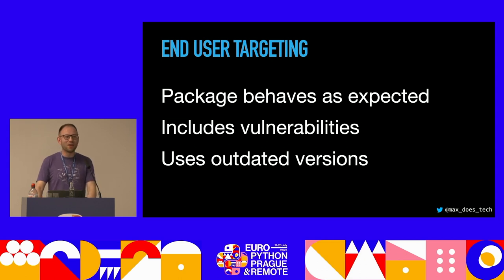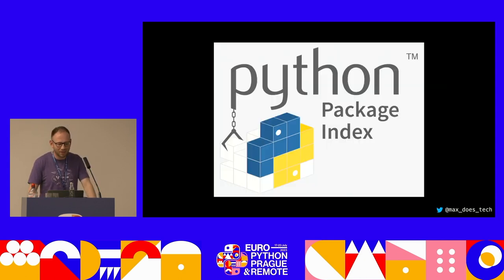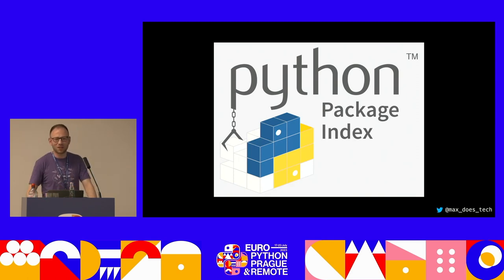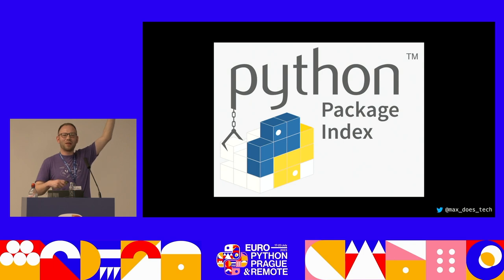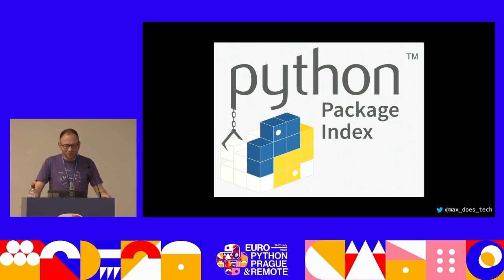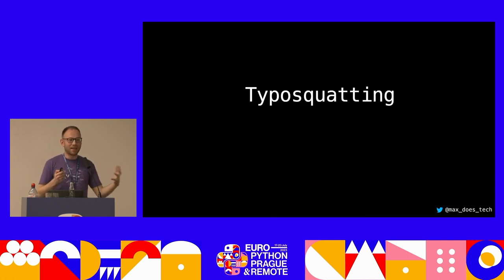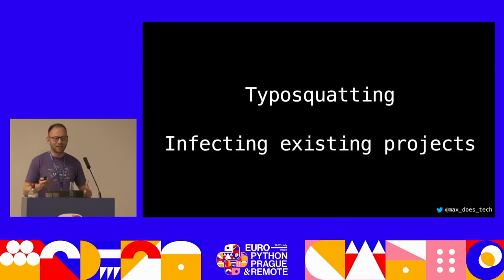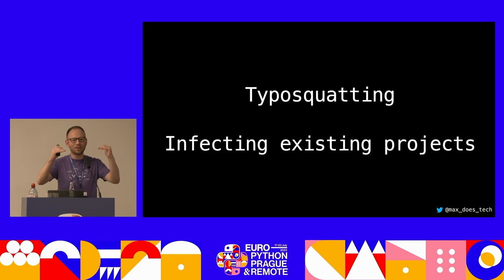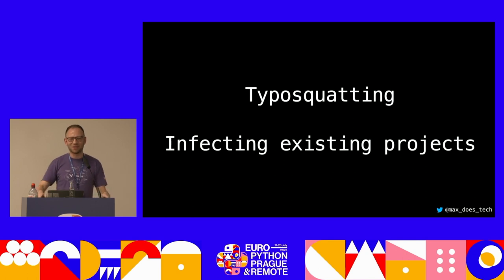End-user targeting usually works like this: malware injected into a package that behaves as normal, but includes vulnerabilities or outdated code, making your users vulnerable too. PyPI is a place we've all hopefully used — hands up if you've pip installed anything. There are some challenges that come with this. There are two main ways malware gets onto PyPI and then gets to you: typosquatting, and infecting existing projects.